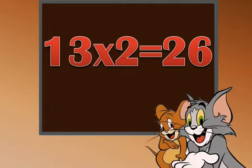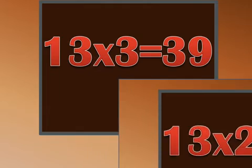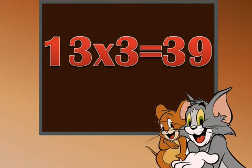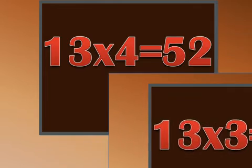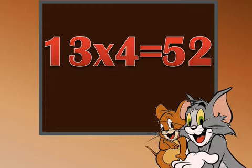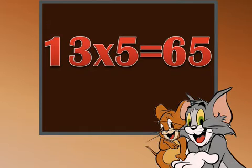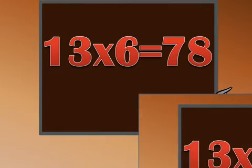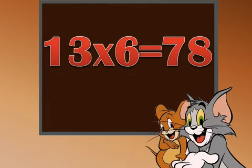13 twos are 26. 13 threes are 39. 13 fours are 52. 13 fives are 65. 13 sixes are 78.